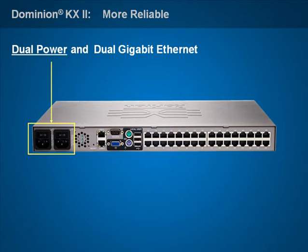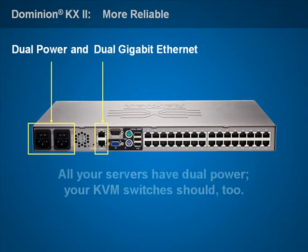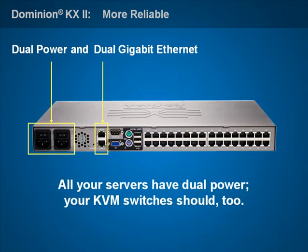Dual internal power supplies and dual Gigabit Ethernet ports, all with automatic failover, and for no additional cost. It just makes sense. All of your production servers feature dual power supplies and dual Ethernet — obviously, your KVM should too.